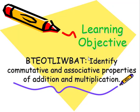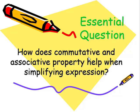By the end of this lesson, I'll be able to identify the commutative and associative properties of addition and multiplication. Our central question is, how does the commutative and associative property help when simplifying expressions?